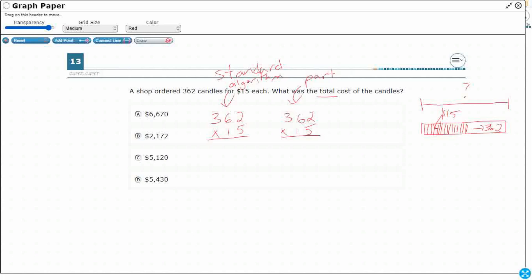Partial products is just a different way of doing it. It might not be the fastest because you have to do quite a bit of adding at the end, but it works.